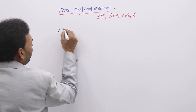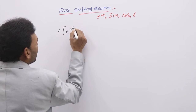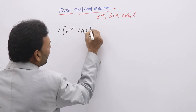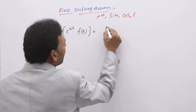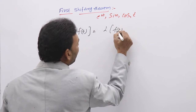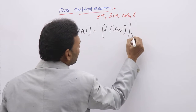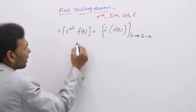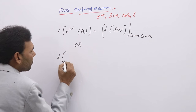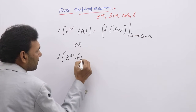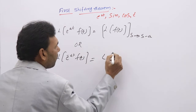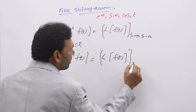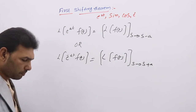What is the First Sifting Theorem? It says: L{e^(at) · f(t)} = L{f(t)} with s replaced by s minus a. Or if you have e^(-at) in product, then find the Laplace Transform of f(t) and replace s by s plus a.